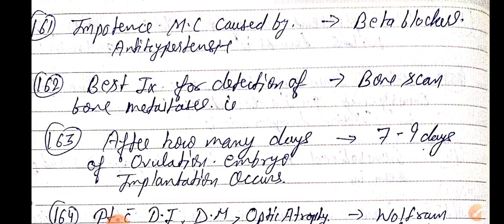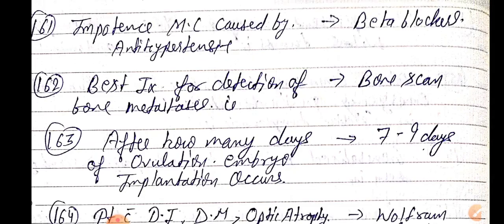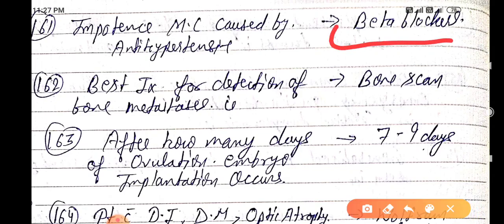Good evening doctors, welcome again. Today we are going to discuss NEET PG 2021 important one-liners, this is Part 17. Let's start. Impotence — most common cause by antihypertensive is beta blockers. Beta blockers.